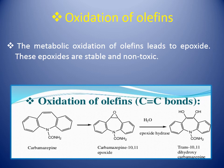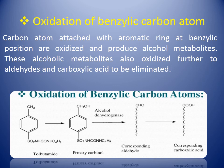The second is oxidation of olefins. The metabolic oxidation of olefins leads to epoxide formation. These epoxides are stable and non-toxic, and their formation leads to more water-soluble products. For example, carbamazepine has a double bond at the 10 and 11 position which is oxidized to form carbamazepine-10,11-epoxide, and results in the formation of trans-10,11-dihydroxycarbamazepine having two hydroxy groups, making the drug more water-soluble and able to be excreted from the body.